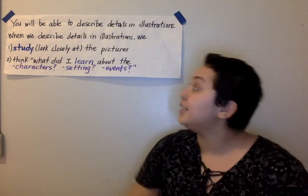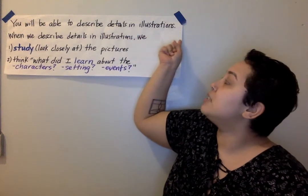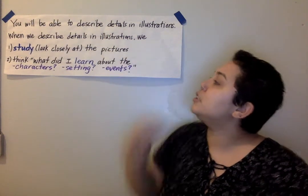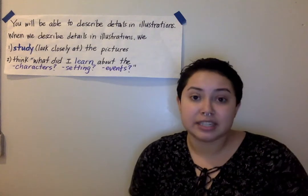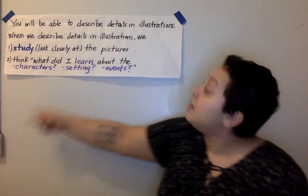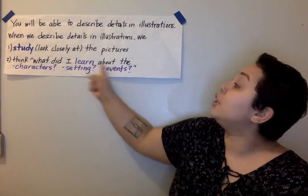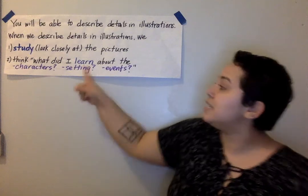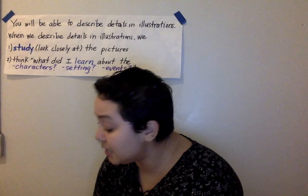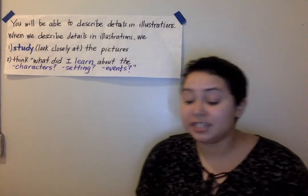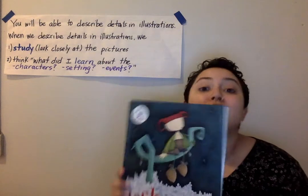Now for today's lesson you will be able to describe details in illustrations. When we describe the details in illustrations, we study them — that means we look closely at the pictures and then we think: what did I learn about the characters, the setting, the events, or anything else in the text? Now we're going to study closely some of the illustrations in Jack and the Beanstalk before we continue reading where we left off yesterday.